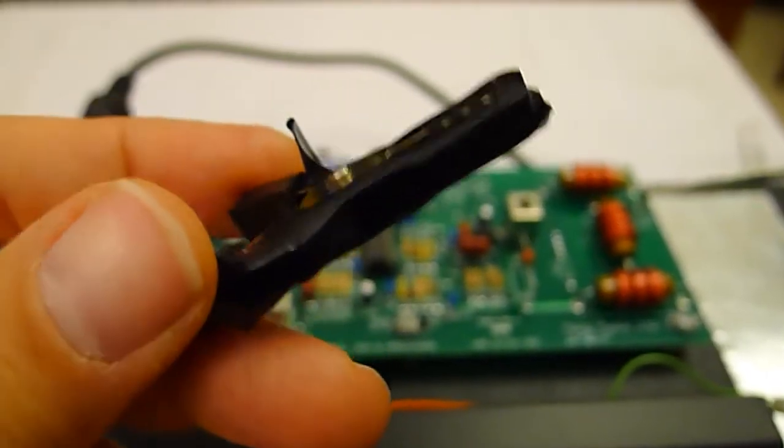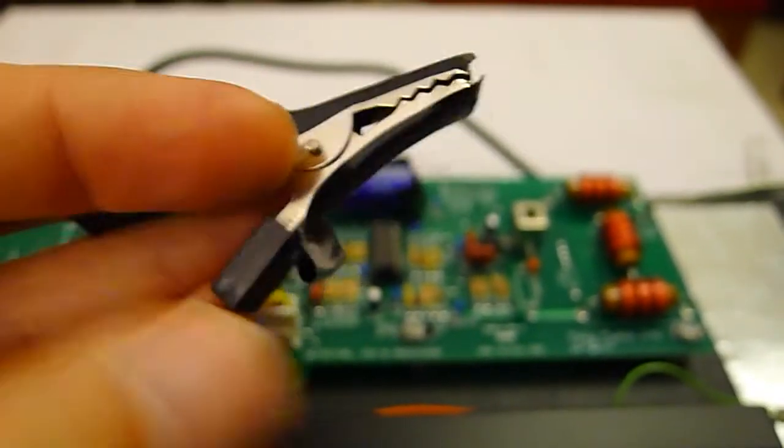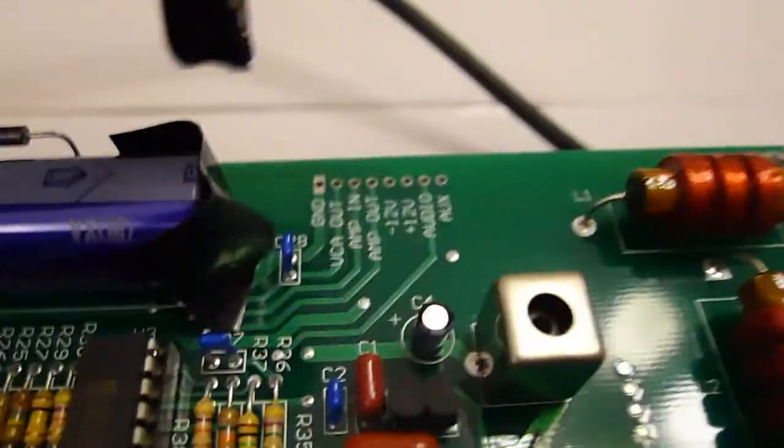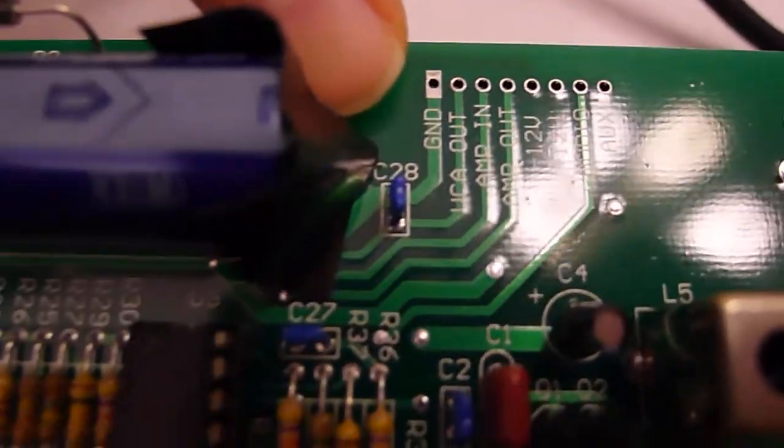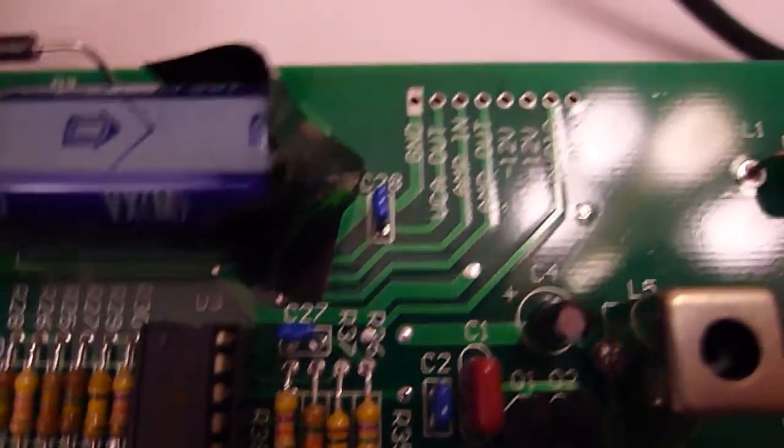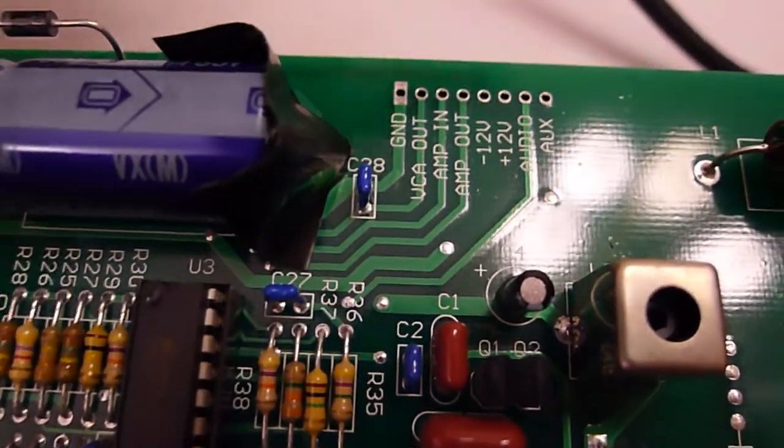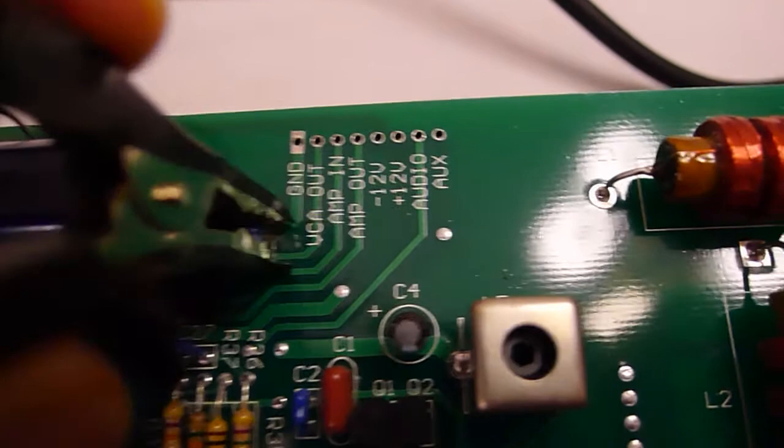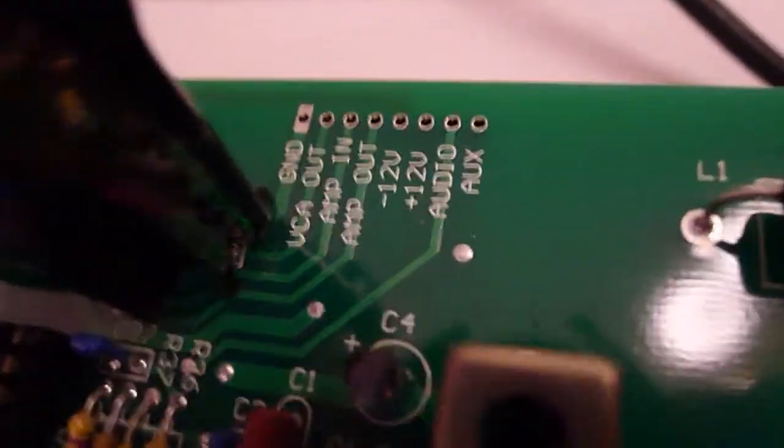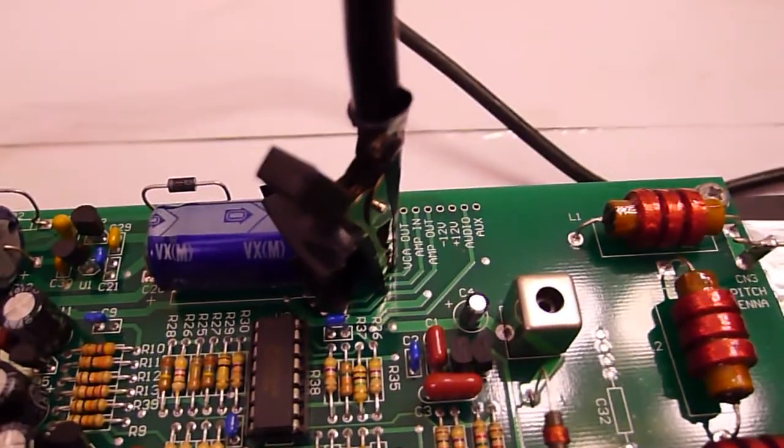Using a clip, connect the two leads of C28 capacitor together. The C28, as you see here, is a very small capacitor, about 10 cm to the left of the pitch antenna connection on the Etherwave circuit board. It's here. In this way you get the highest volume level.